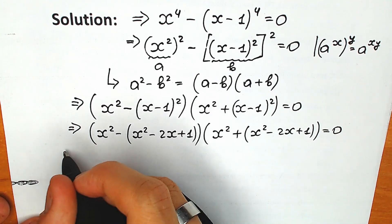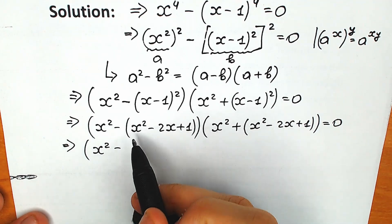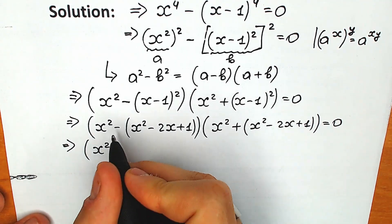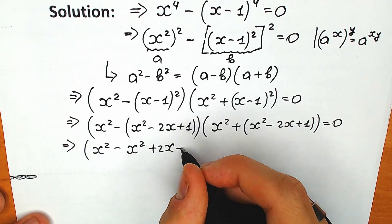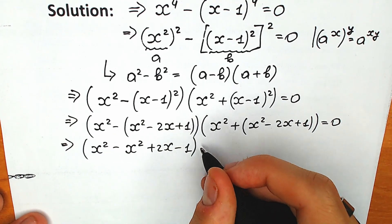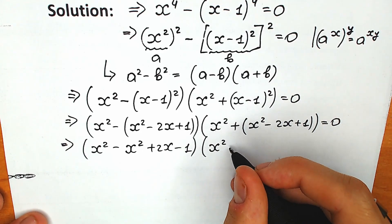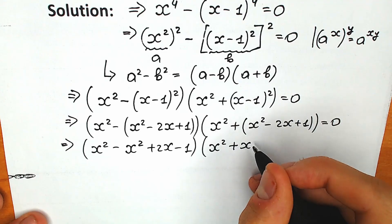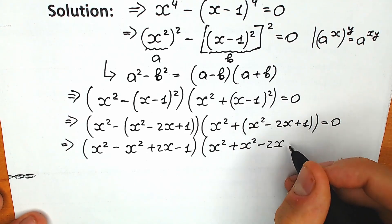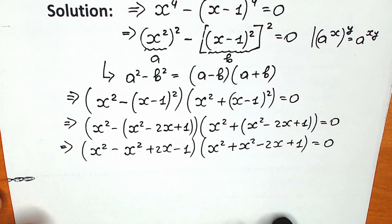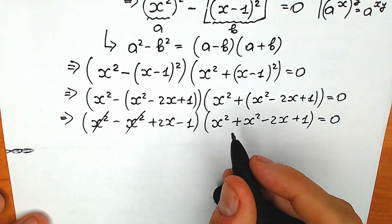Let's open the parentheses. We have x squared minus x squared plus 2x minus 1 in the left parenthesis. In the right one, we can get rid of the parenthesis since the sign is positive: x squared plus x squared minus 2x plus 1, equal to 0. The x squared terms cancel.